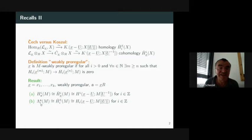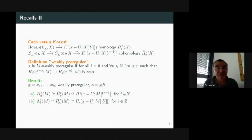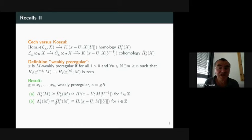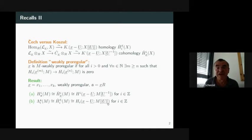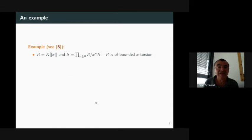The second main result I mentioned: the left-derived functor of the completion is isomorphic, under the assumption of a weakly pro-regular sequence, to the Čech homology, and by the above result is isomorphic to the Koszul homology with respect to the formal power series module. This was the basic material. Now let me continue with an example.